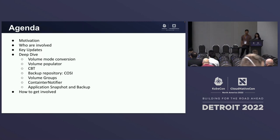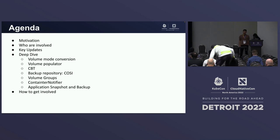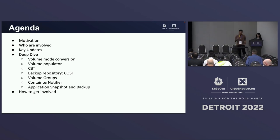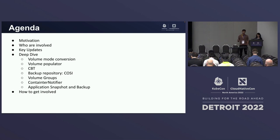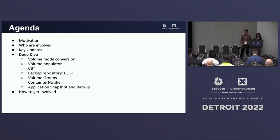We have a long agenda to go through today, so we'll try to go fast. The agenda is mainly to deep dive into a couple of gaps in this whole data protection working group — what are we doing, what kind of progress we've made so far, and what problems we're trying to solve. As usual, we'll start with motivation, then move on to the organizations actively contributing, give key updates from the past year or two, loop into the individual gaps, and lastly close with how you folks can get involved.